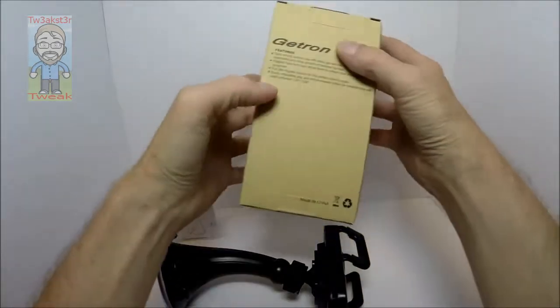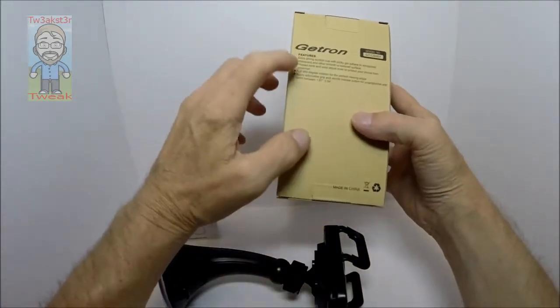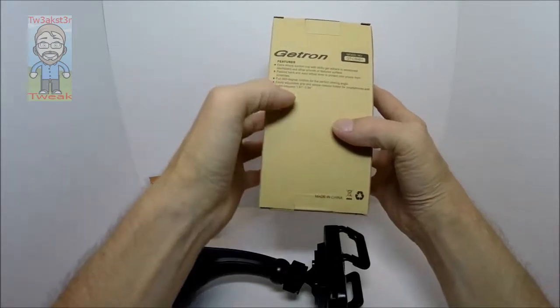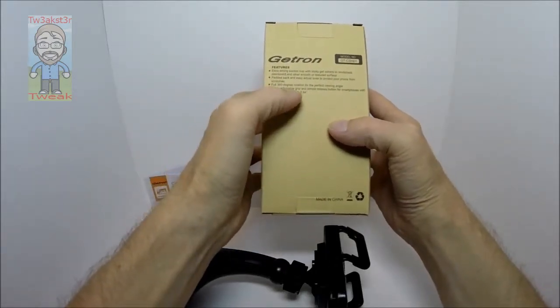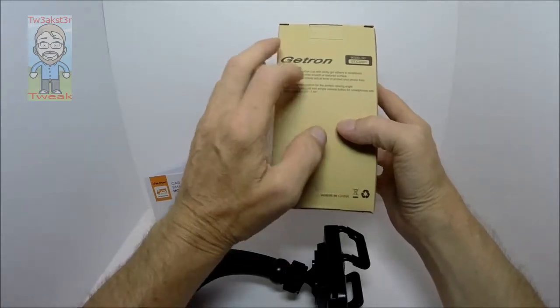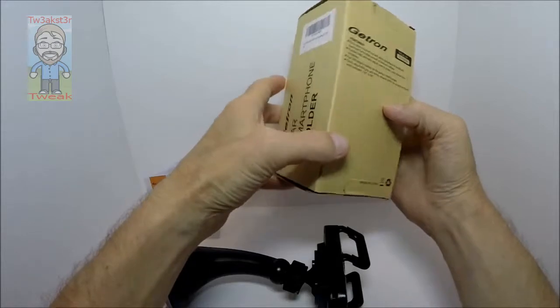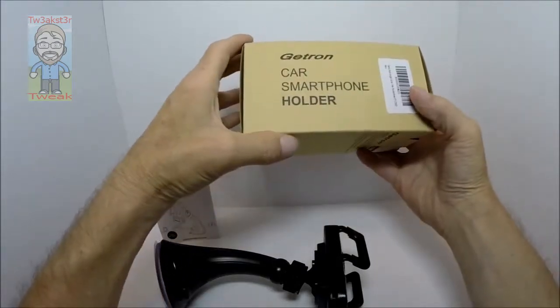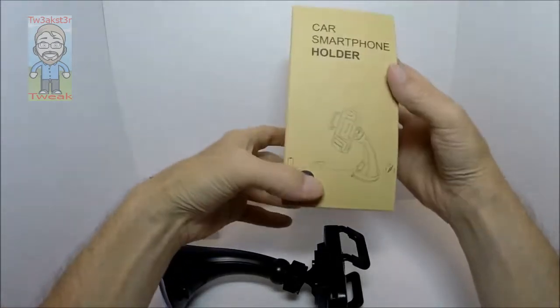The box that it comes in lists the features. You have 360 degree range of rotation. It fits phones from 1.97 inches to 3.94 inches. So it's nice that it's right there on the actual box. This is basically the box it comes in, a little picture of the item.